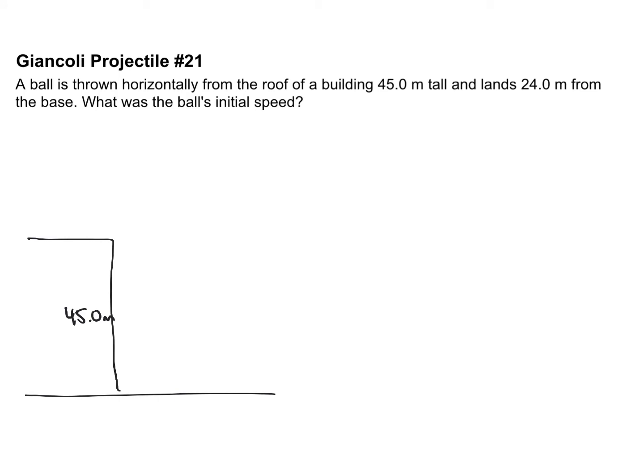Okay, so I'm just drawing the building here, 45 meters tall, and a ball is going to get thrown off horizontally. So the initial speed, which we're trying to find out, is horizontal, so that means I can label it vx. I'll label that as a velocity that's totally horizontal and it's got zero vertical component. At the moment it's gonna make a parabola.